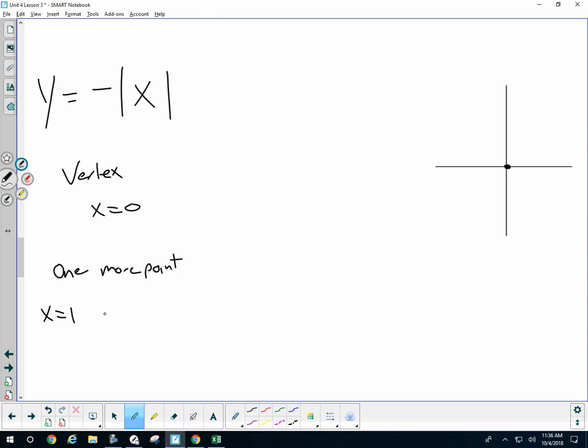Well, if I plugged in 1, I'd have y is equal to negative absolute 1, which is negative 1, which means I have one more point over here, 1, negative 1. Which means I'll have the point negative 1, negative 1, which means my graph all of a sudden is flipped.